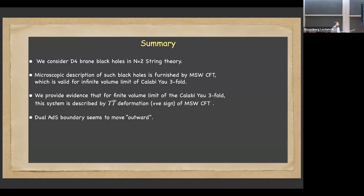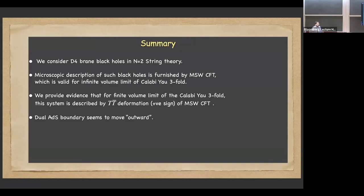The question we pose in this work is: suppose you move away from the large volume limit and go to finite volume. What might be a good description of this system? We provide evidence that this might be captured by the TT-bar deformation of the MSW CFT, with a positive sign for the deformation. There is a holographic dual story, which we are just beginning to scratch — it appears that the boundary is moving outward.